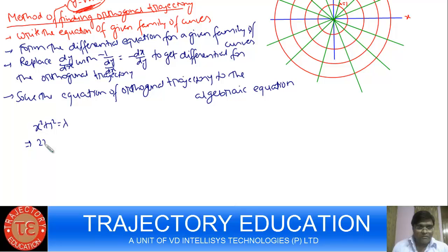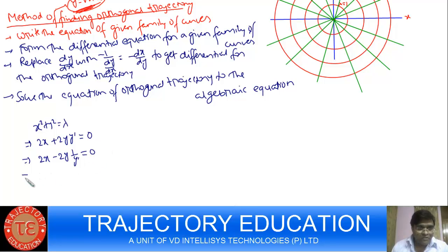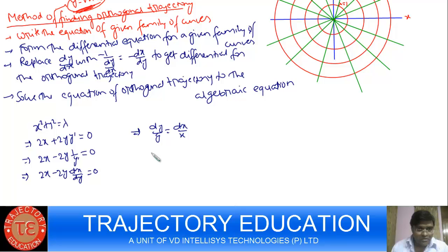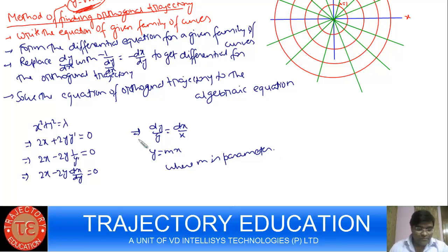For example, this was our family of concentric circles. If I get the differential equation, this will be 2x + 2y·y' = 0. So this is the differential equation of the family of concentric circles. Now you replace y' with minus 1/y'. So this is the differential equation of the orthogonal trajectory. Now we have to solve this, and that will give you y = mx, where m is an arbitrary parameter.